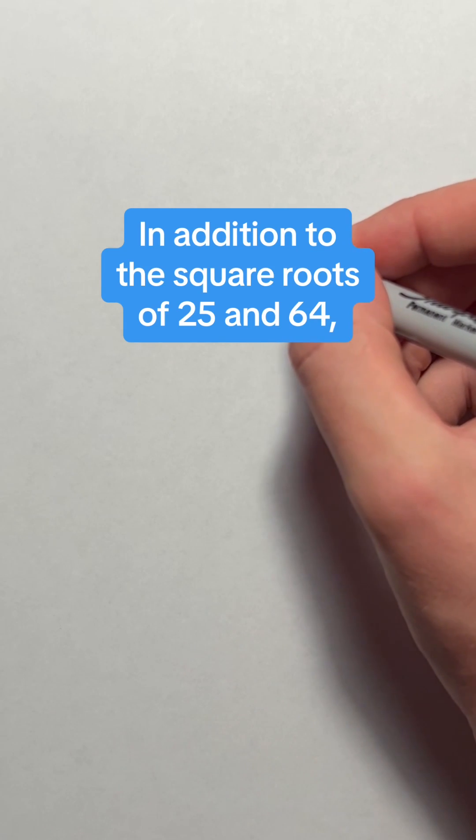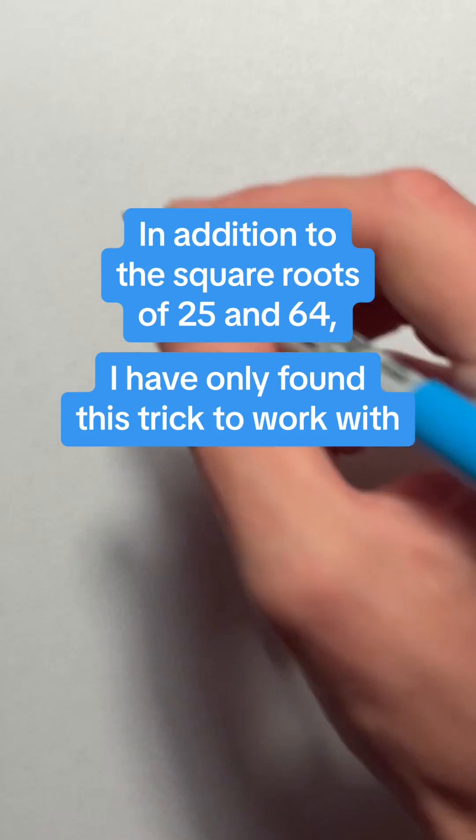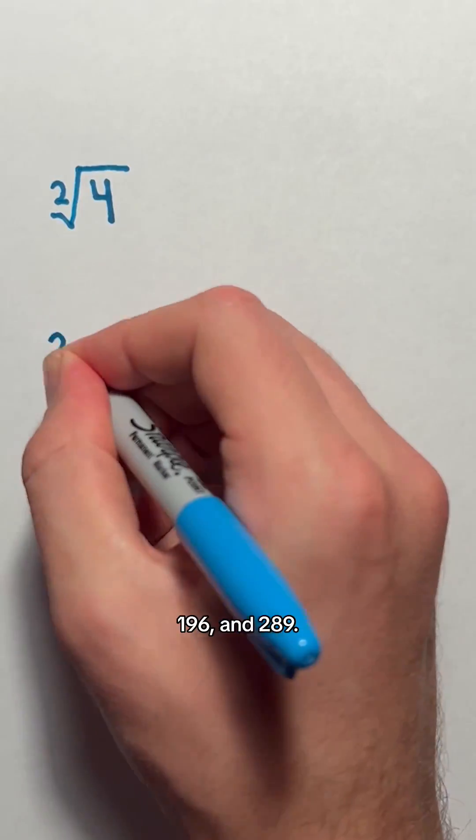In addition to the square roots of 25 and 64, I have only found this trick to work with the square roots of 4, 196, and 289.